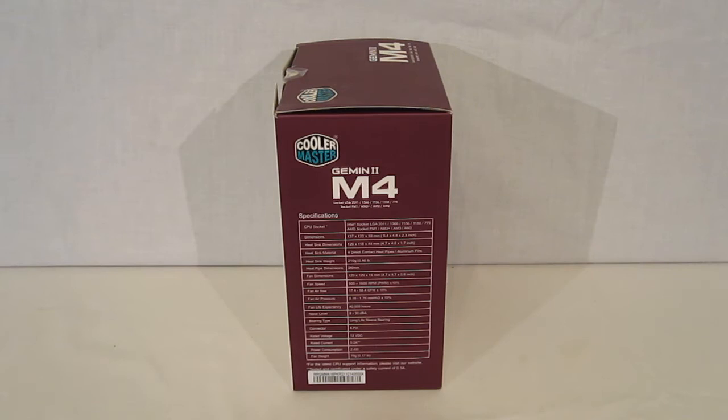Over on the side of the box we get some more of the specifications and a little bit more detail. Dimension on the unit is actually 137 by 22 by 59. So it's going to have a little bit bigger footprint than you'd normally expect in the case, but that 59 millimeters tall is just absolutely tiny. It's got the four direct contact heat pipes with aluminum fins. Weighs in at only 210 grams. Those four direct contact heat pipes are 6 millimeters, and the fan speed of 500 to 1600 is PWM controlled.